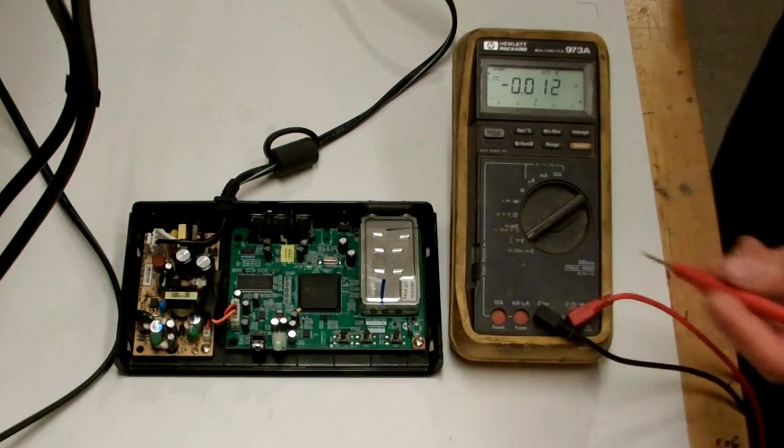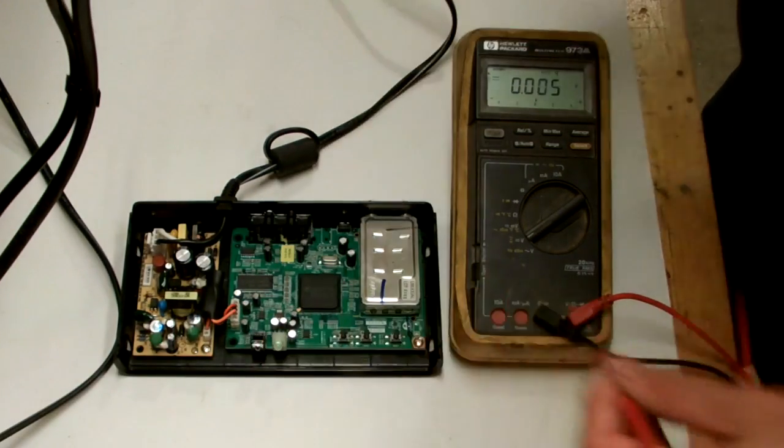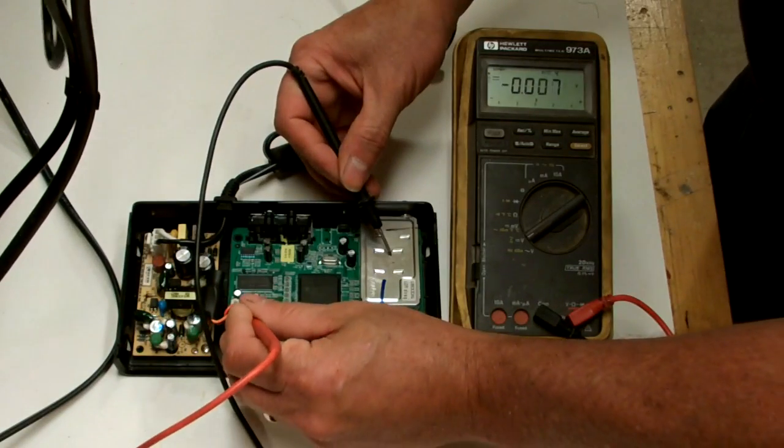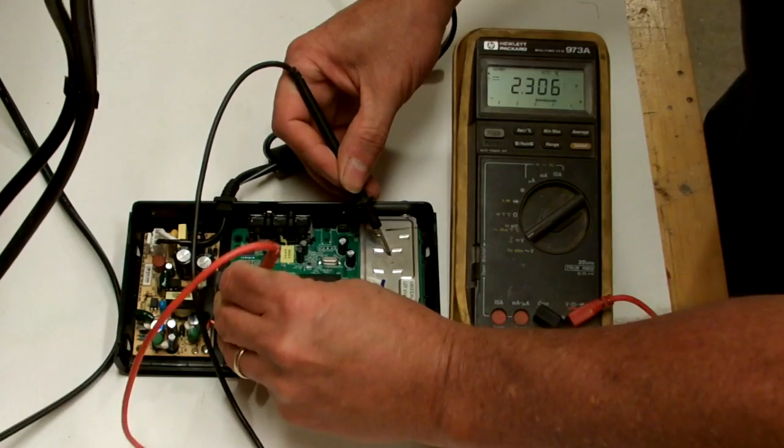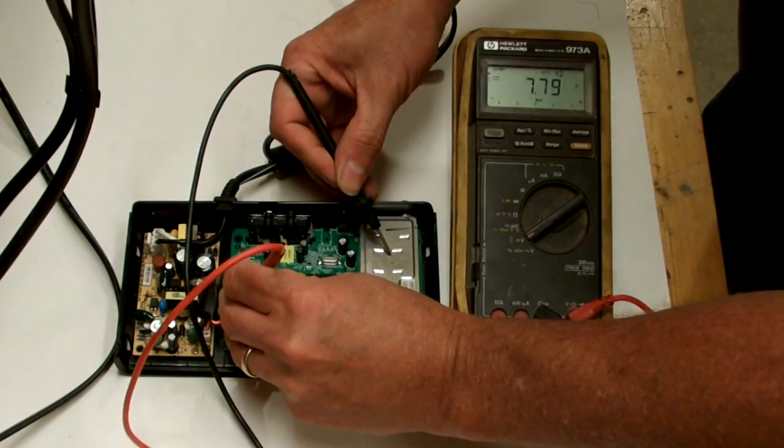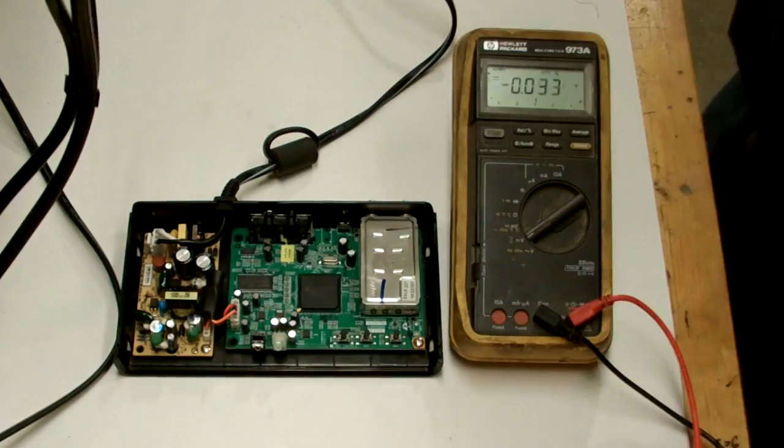So on this power supply, we're supposed to have 5 volts and 3.3 volts. And if we look here, about 2.3 volts and about 7.8 volts. Clearly the power supply is not working right.